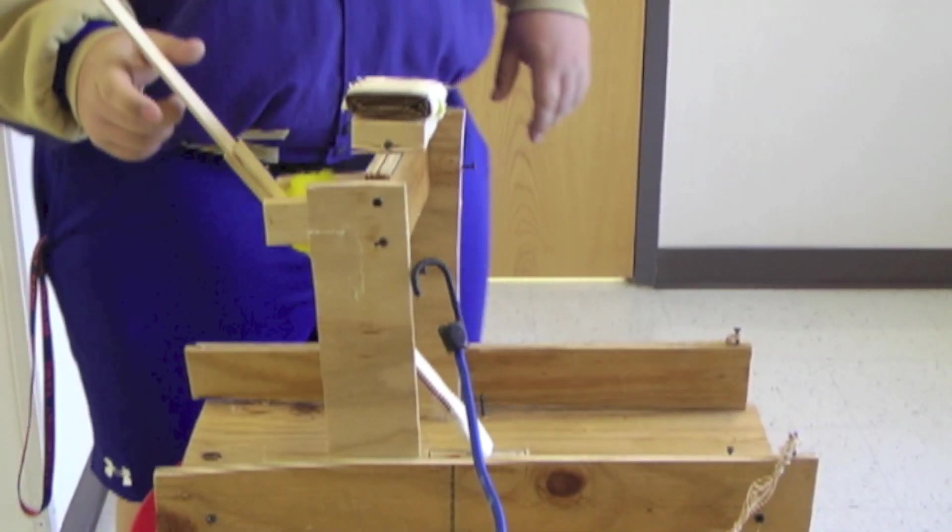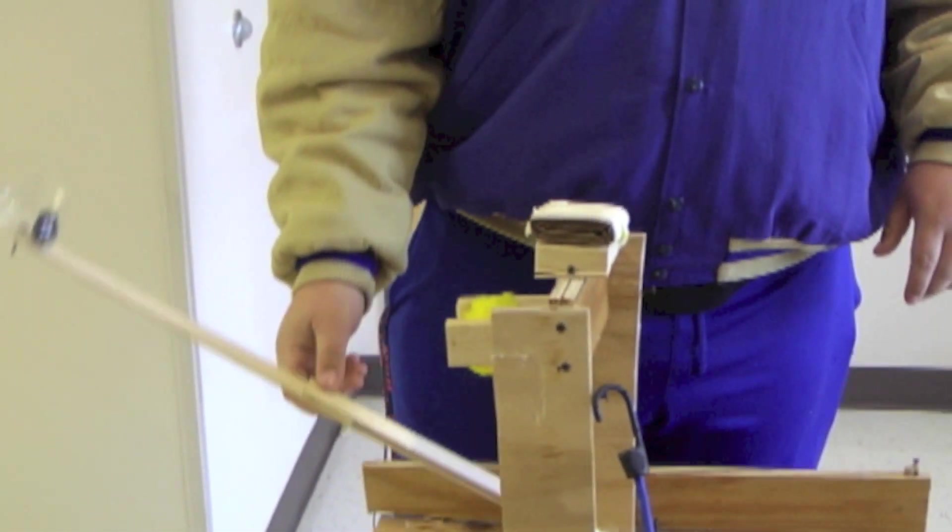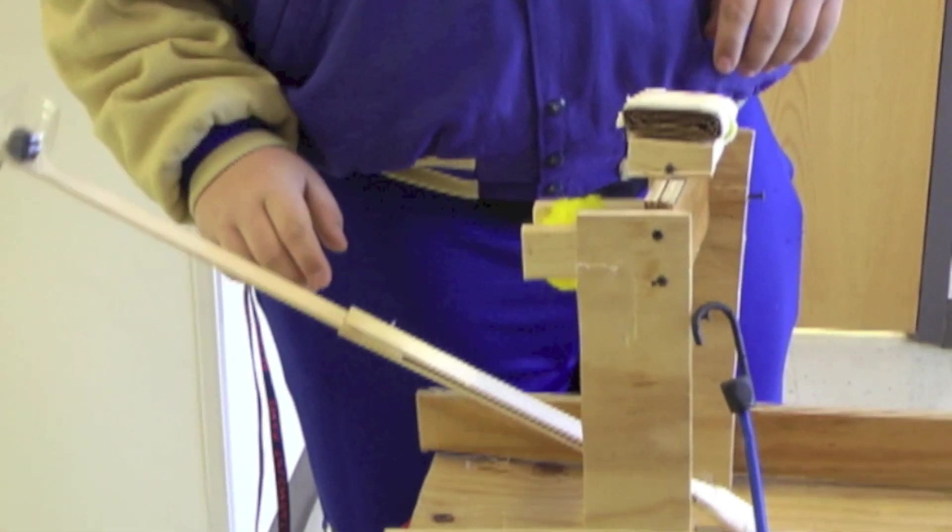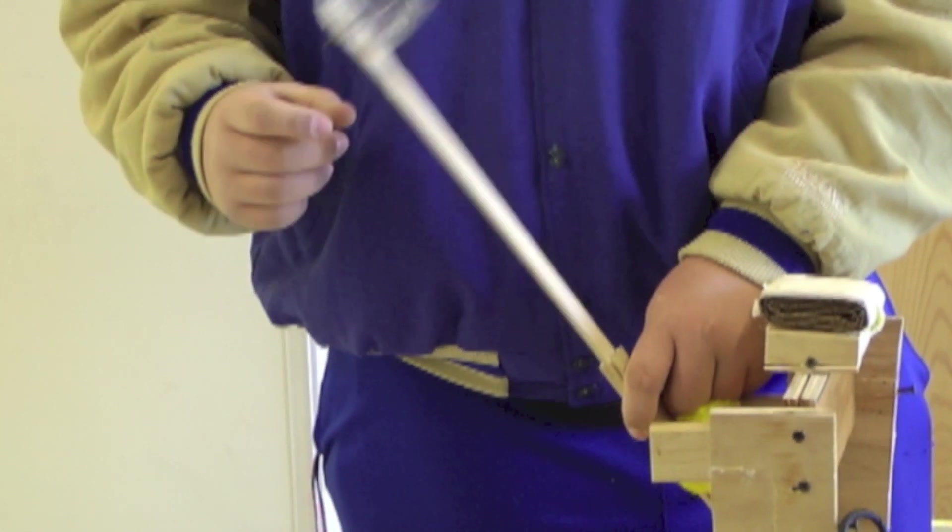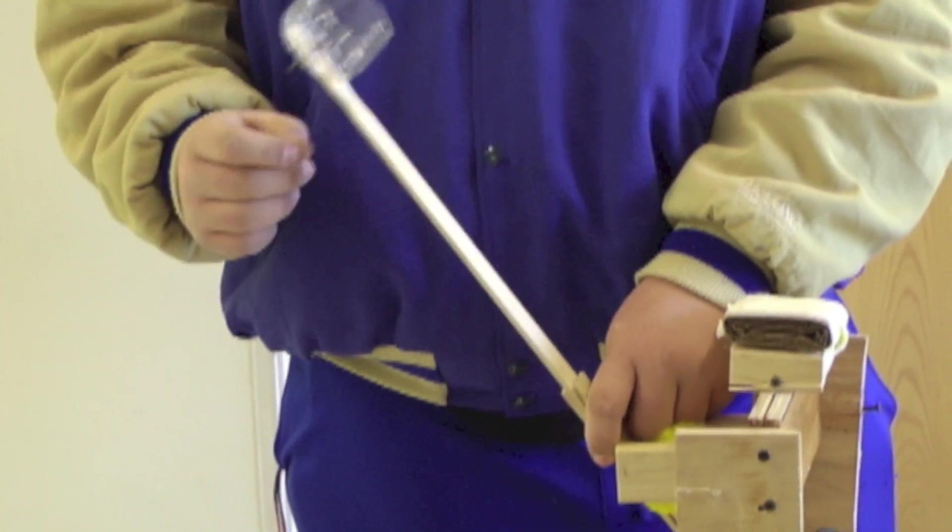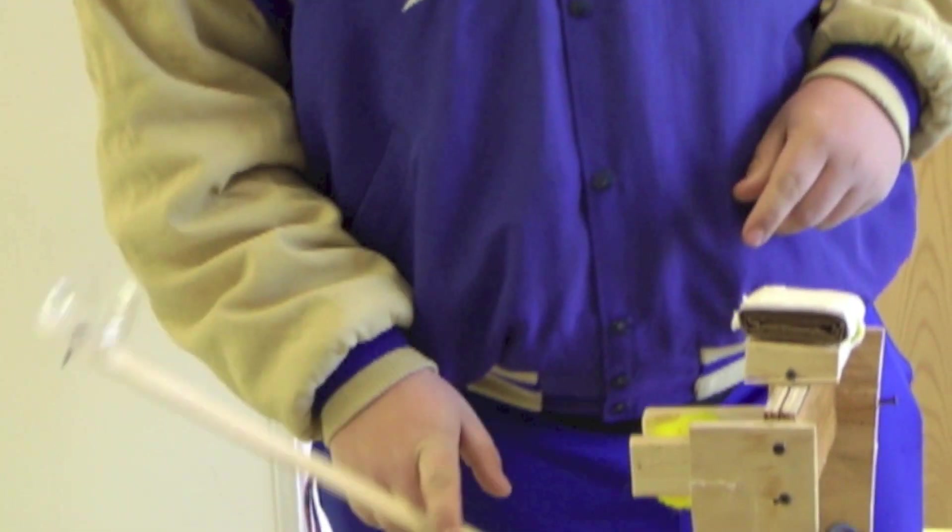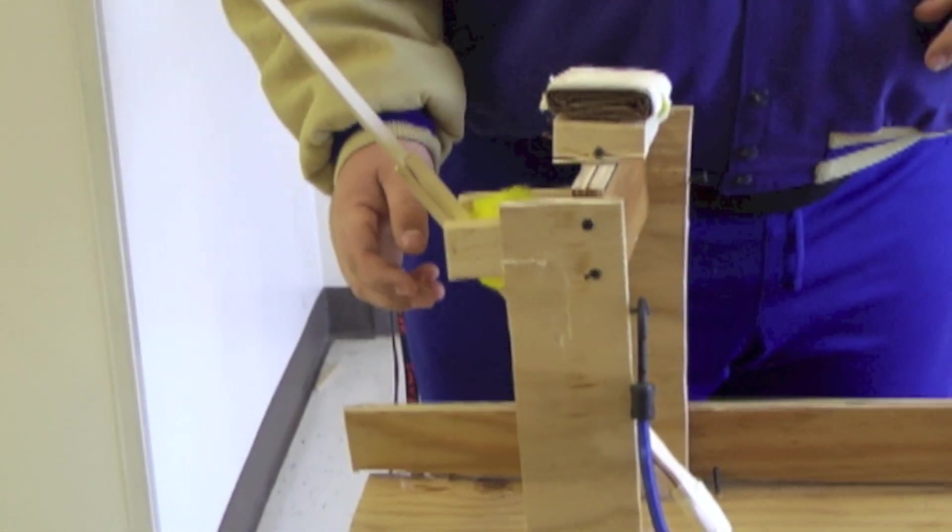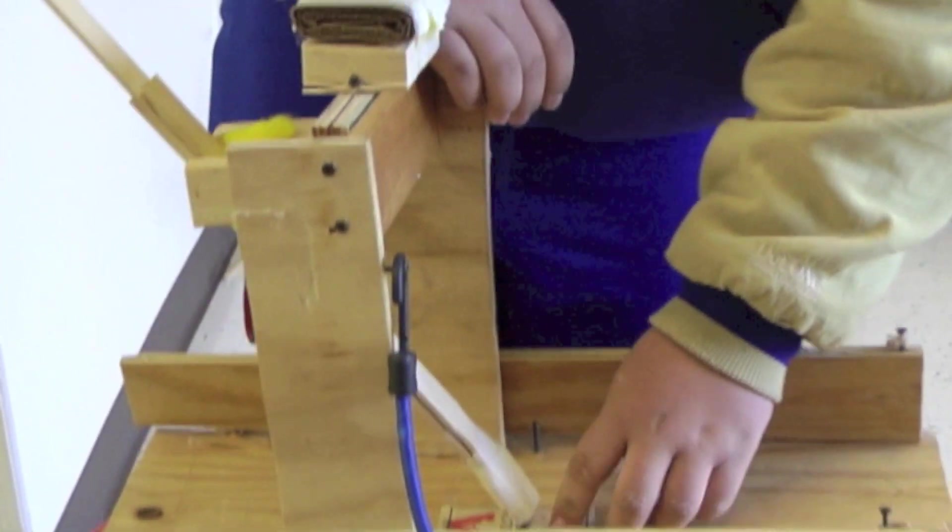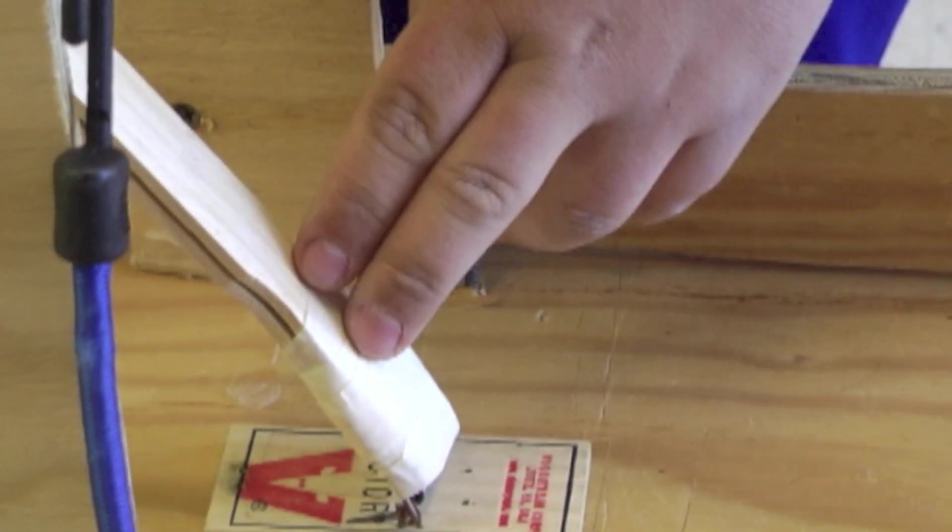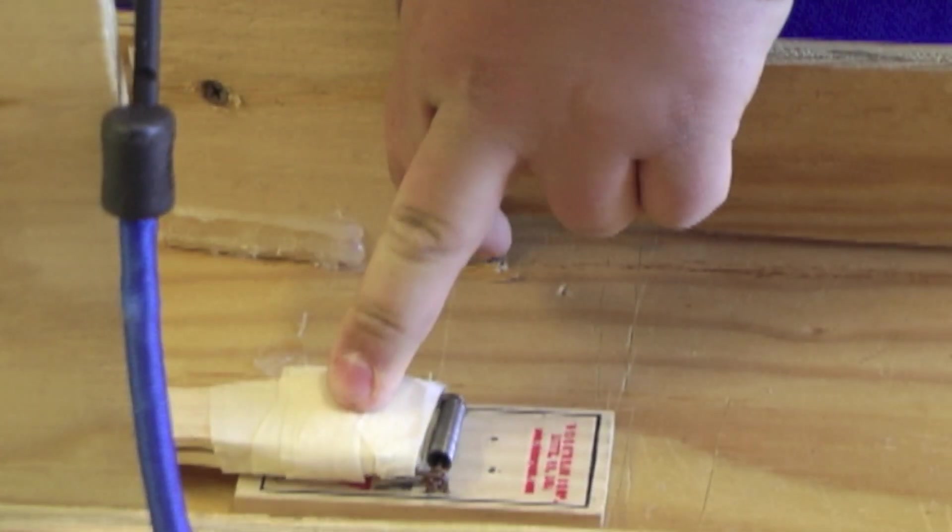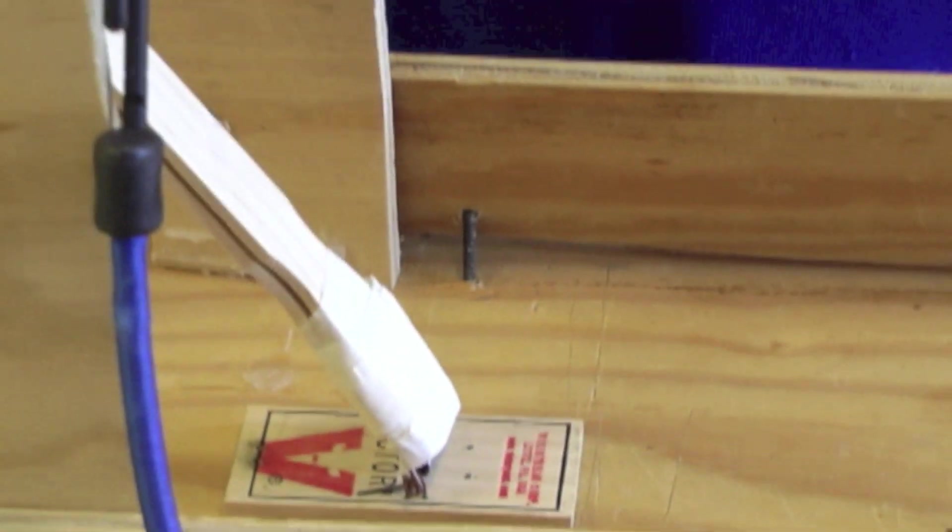We used three paint stirrers to make the arm. We used one to hold it for the little flip thing, then we have two to stabilize it down here. We used a mousetrap to keep it down to give it a little bit more tension. It doesn't do much, but it gives it a little bit.